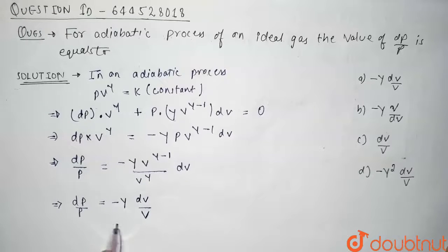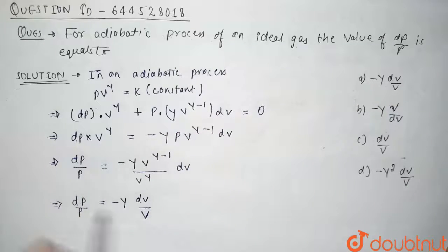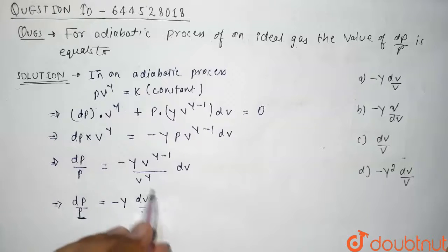From here we can clearly see that for adiabatic process of an ideal gas, the value of dP/P comes out to be minus γ dV/V. Here dP/P and dV/V are the fractional change in pressure and volume respectively.